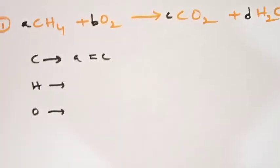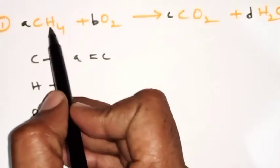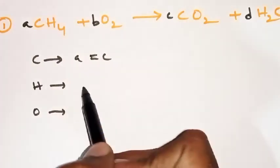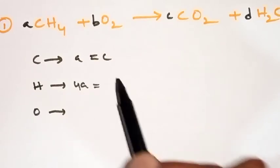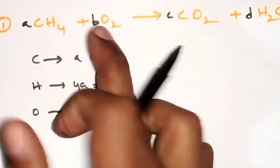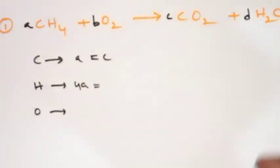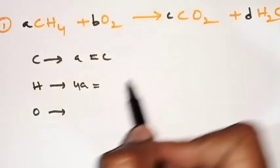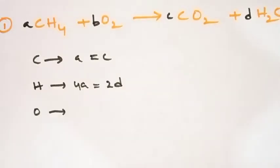Now look at hydrogen. On the left side, CH₄ has 4 hydrogen atoms, so left side hydrogen = 4a. In O₂ there is no hydrogen. On the right side, H₂O has 2 hydrogen atoms, so right side hydrogen = 2d. Therefore our second equation is: 4a = 2d.